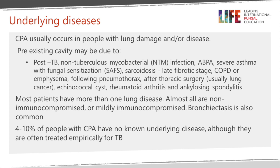It's common for patients to have more than one lung disease, and bronchiectasis is quite common. Some people with CPA have no known underlying disease and may be treated empirically for TB. This is important: if someone has had TB and seems to deteriorate again, clinicians often try antibiotics a second time, and if there's no response the patient may be labelled as multi-resistant TB. Our work in Uganda has shown this is often misleading — check the immunology to see if there's any suggestion of aspergillus.